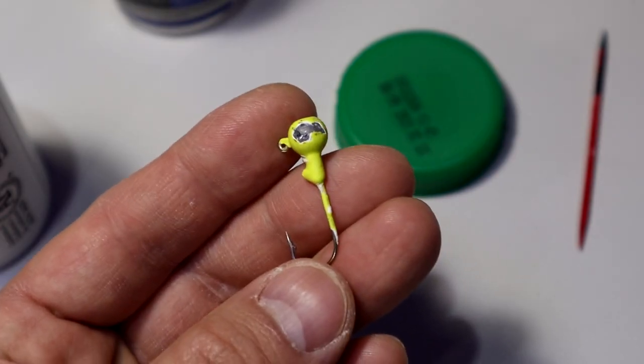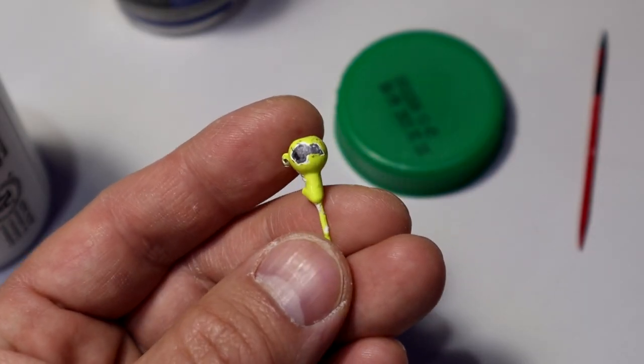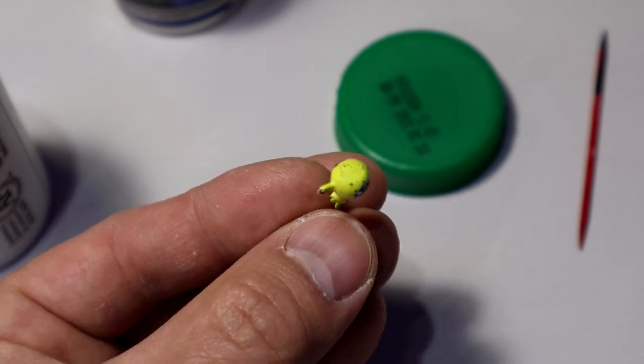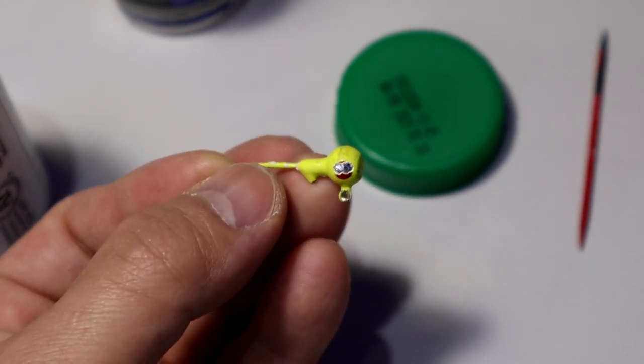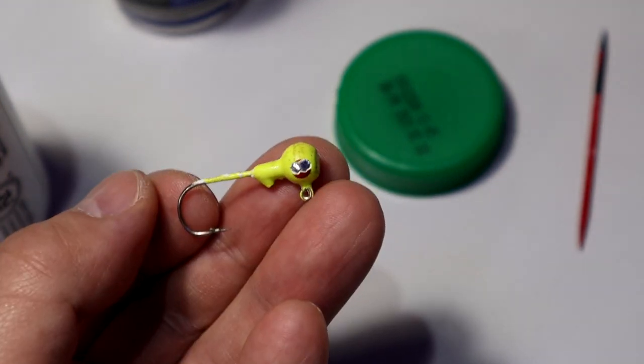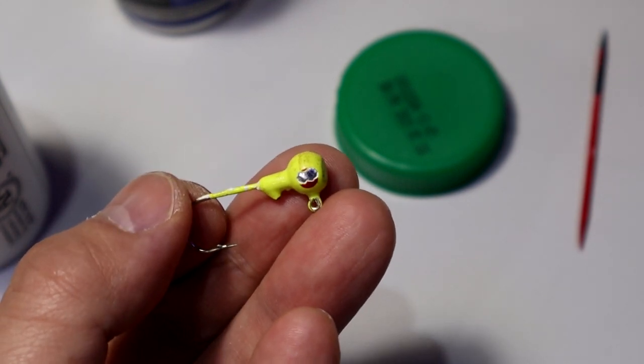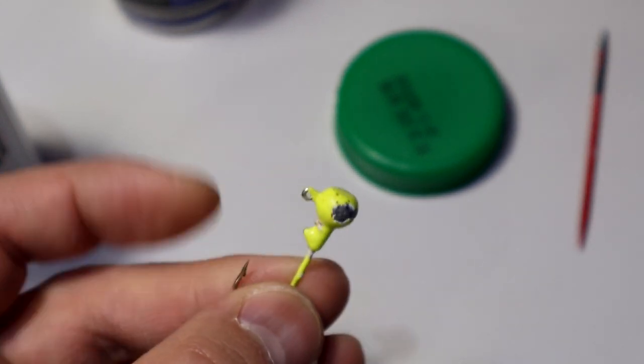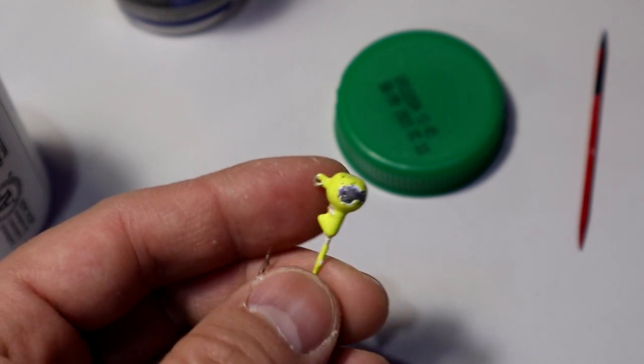So one example is something like this jig head that had a few knocks and bruises, and so I'm going to repaint that. I'll show you a really quick and simple way how I paint these jig heads and put a new eye on it and just make it a little bit better.